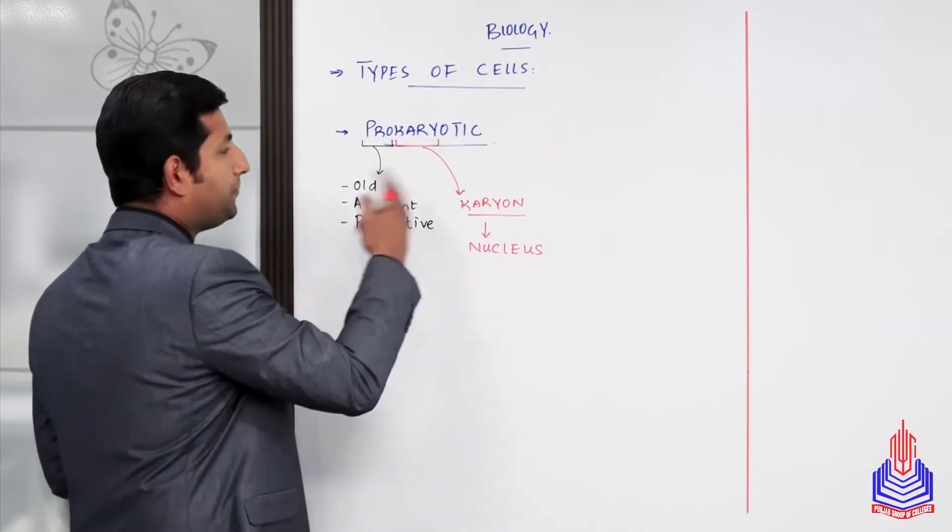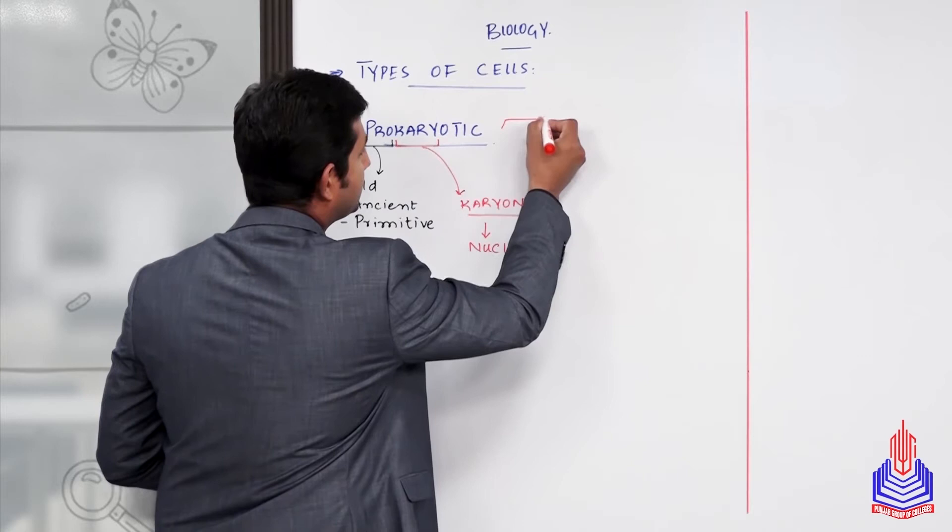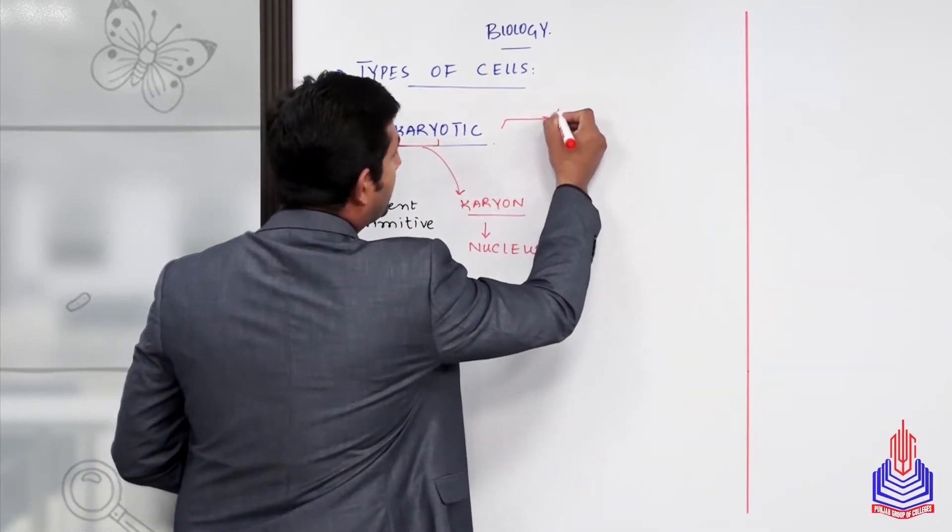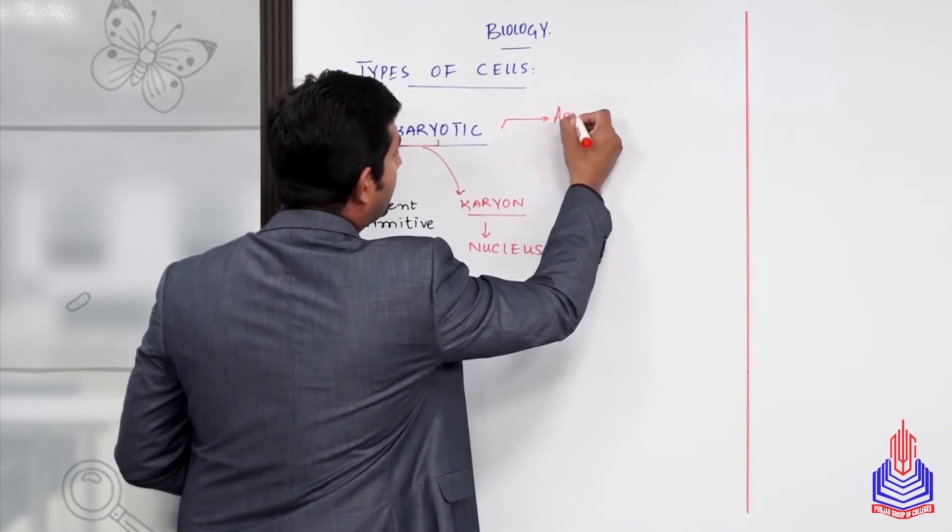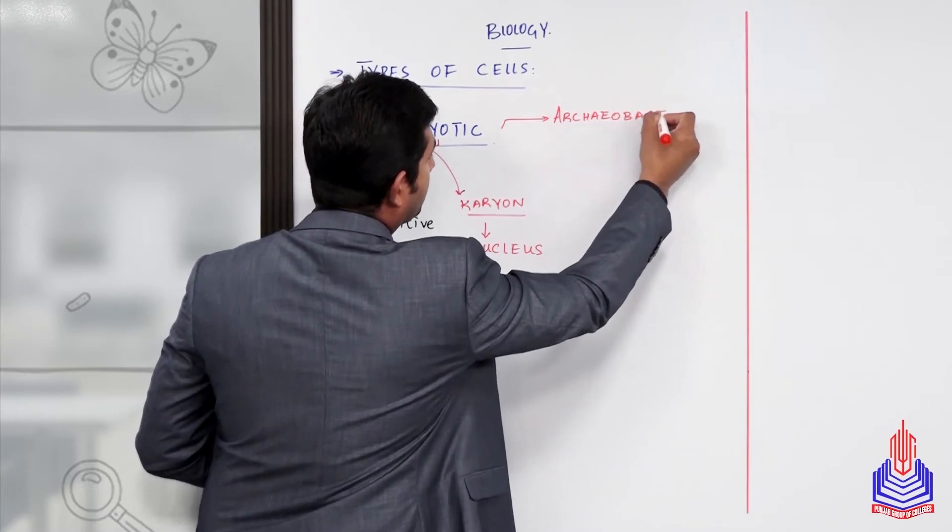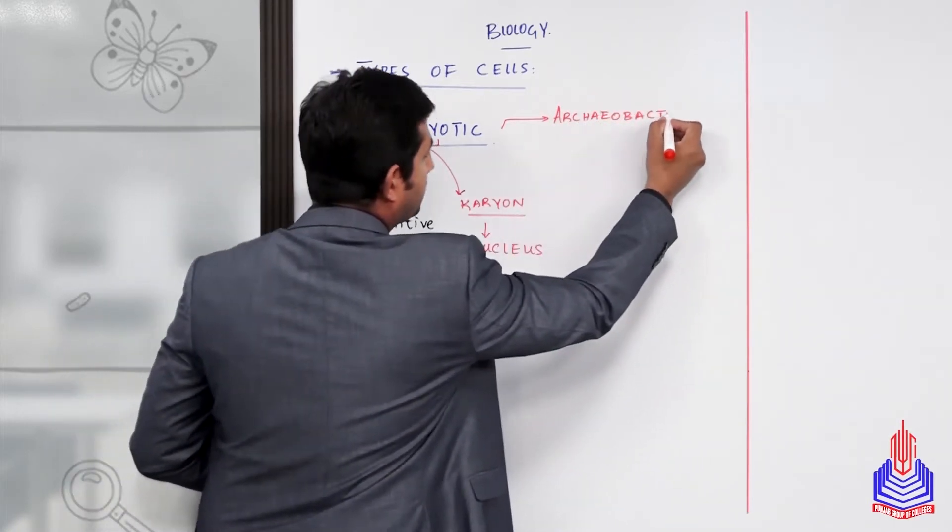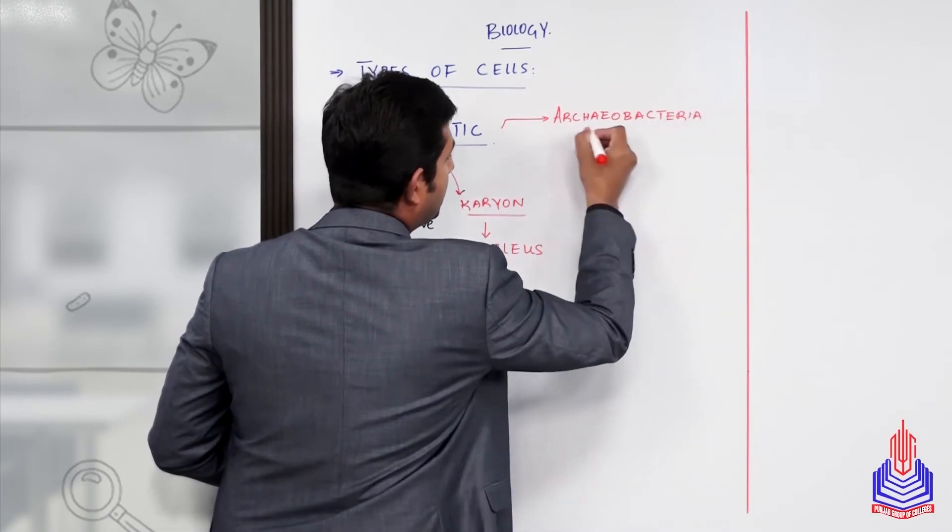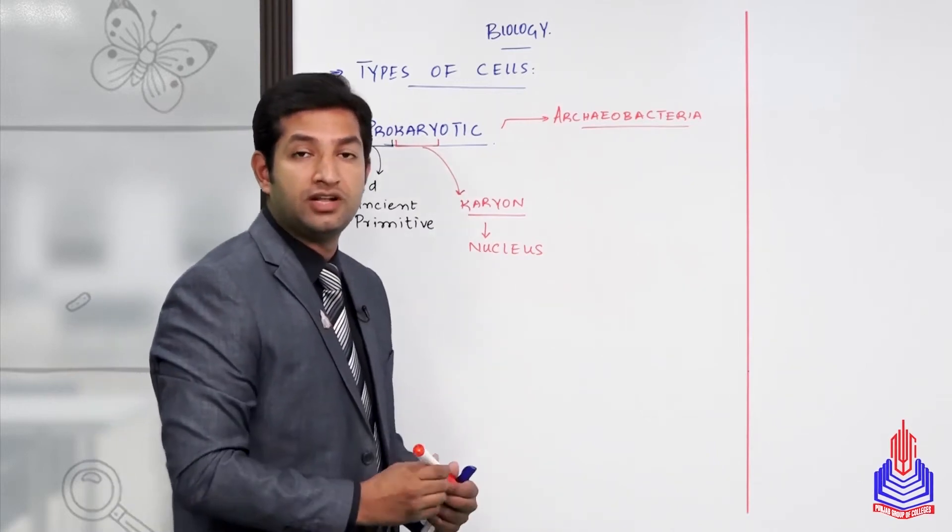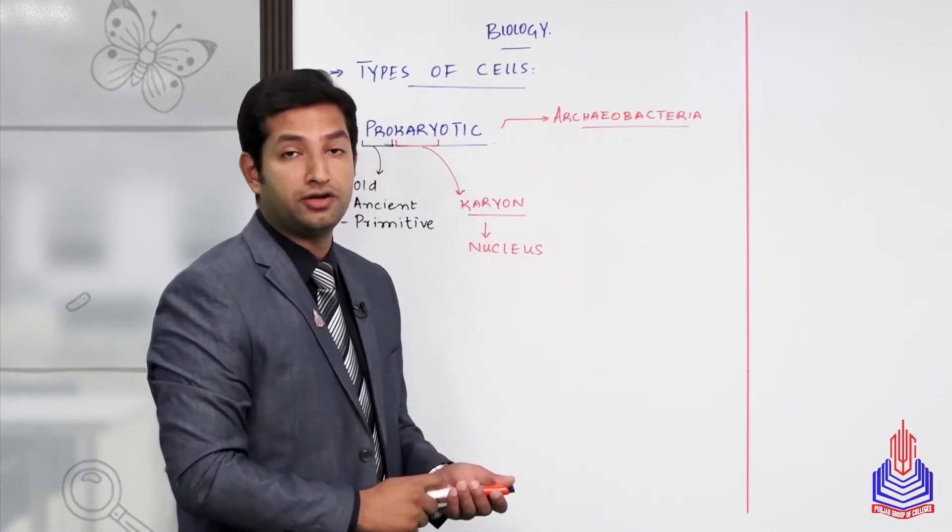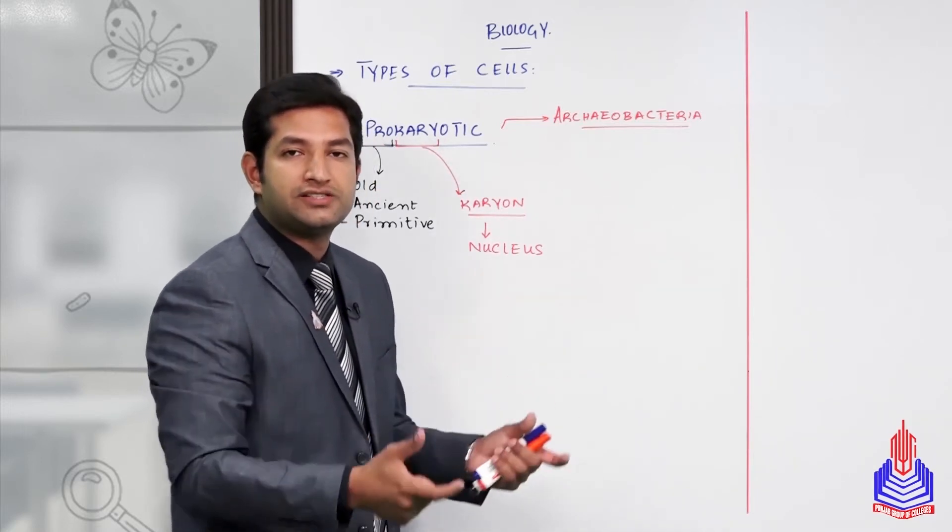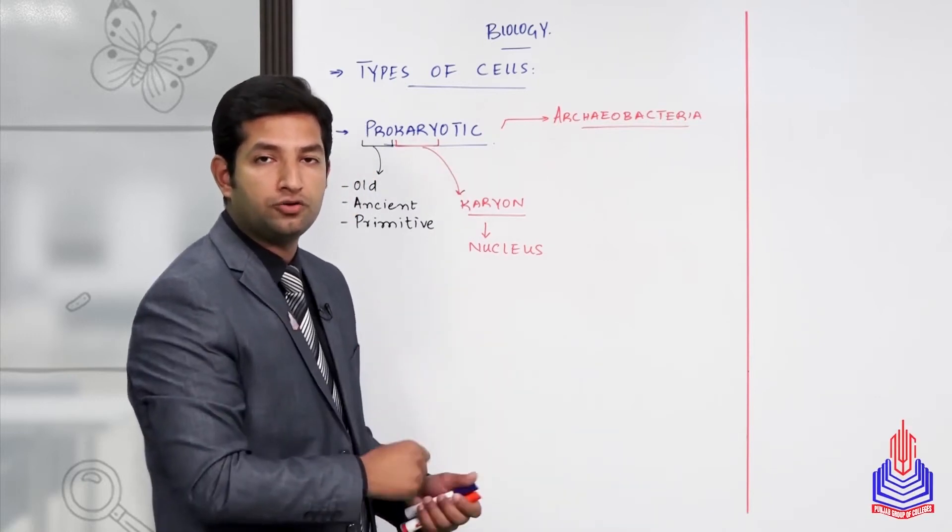For further distribution, the prokaryotic cells have been differentiated into two major groups. The older group is called archaeobacteria. It is said that archaeobacteria were the first ever simplest life forms on planet Earth - the first organized cellular forms to appear on Earth.